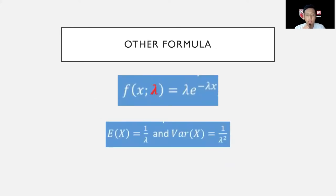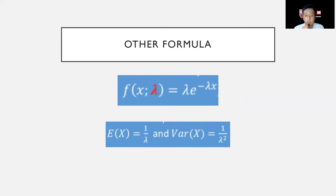Besides the general formula, we can express the exponential distribution using lambda, which represents the rate parameter. The formula is f(x) equals lambda times e to the power of negative lambda times x. Lambda can be found by the relationship: mean equals 1 over lambda, or variance equals 1 over lambda squared.